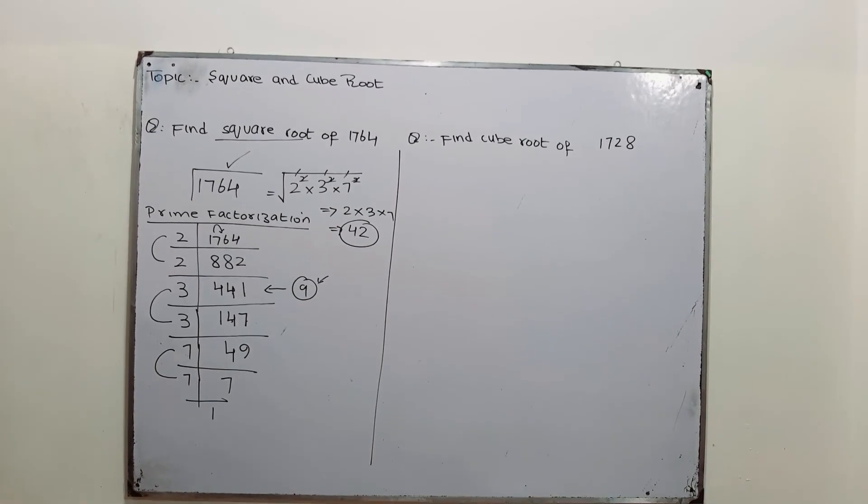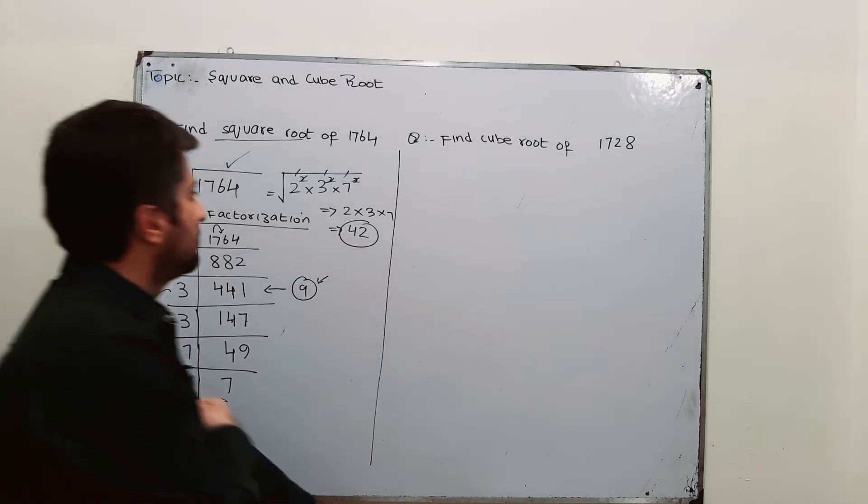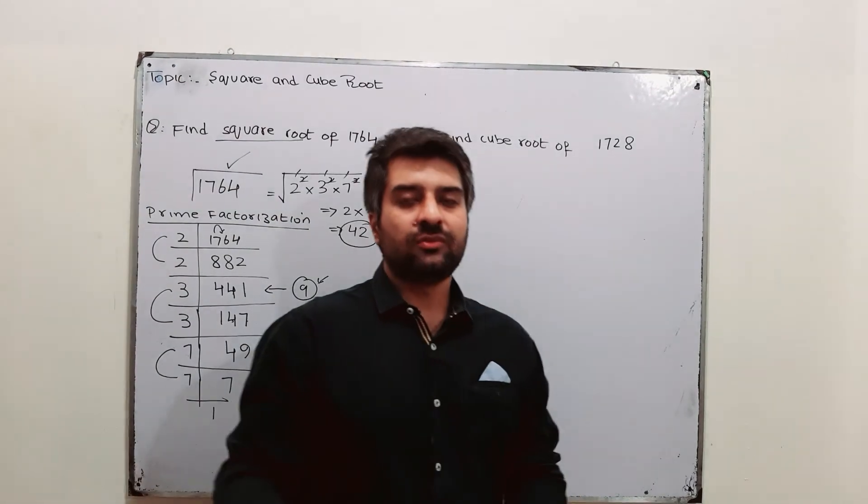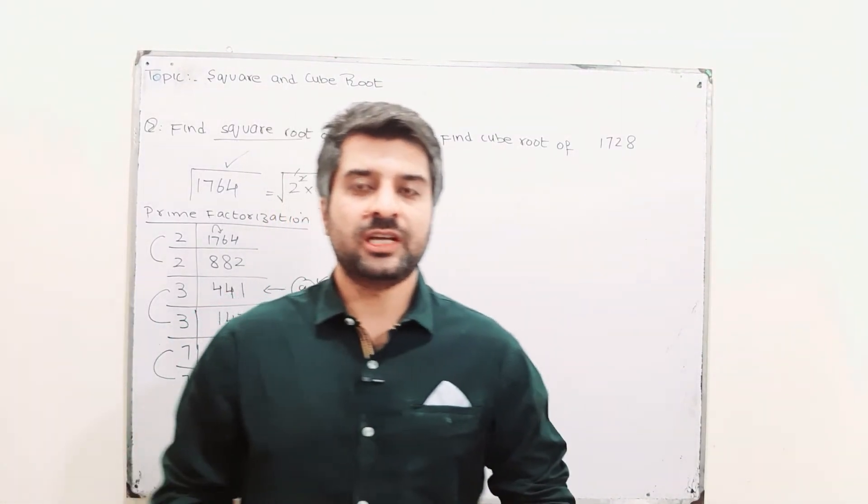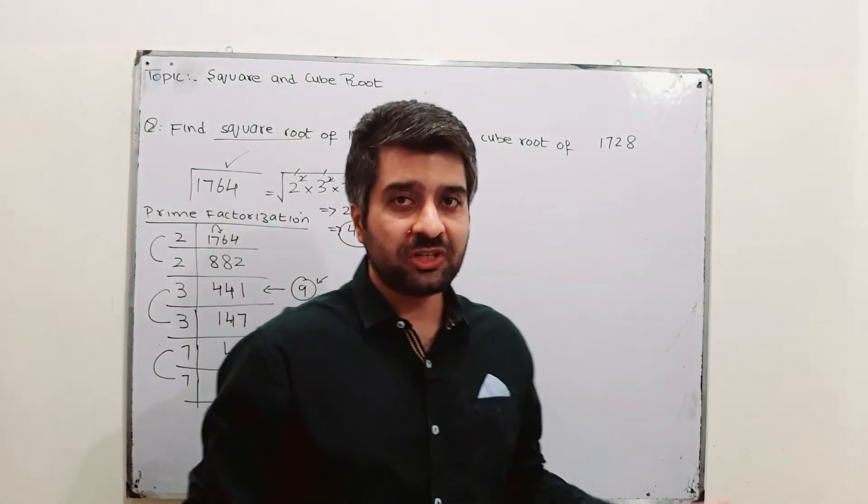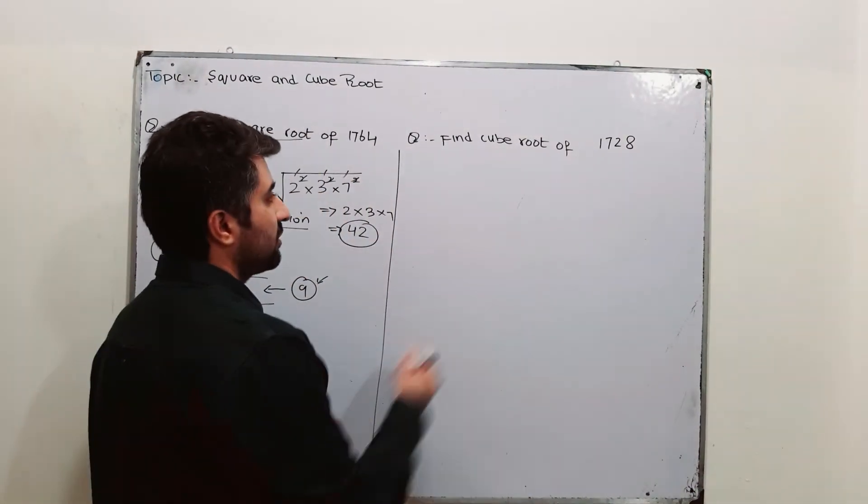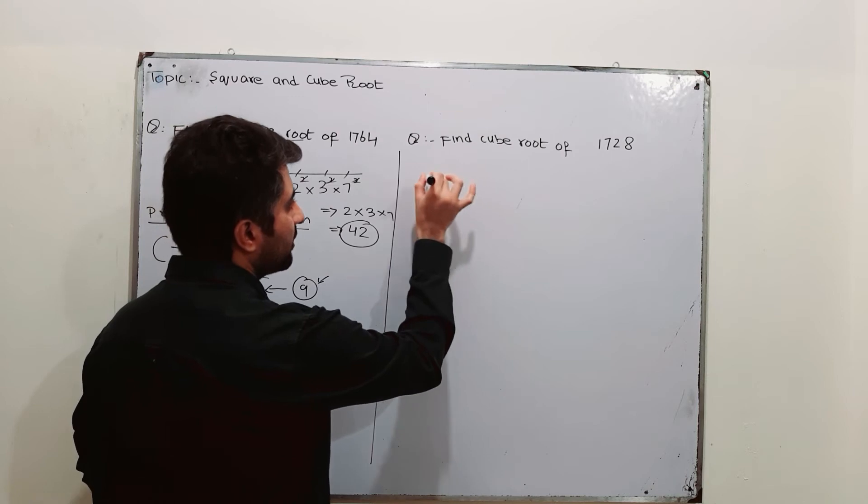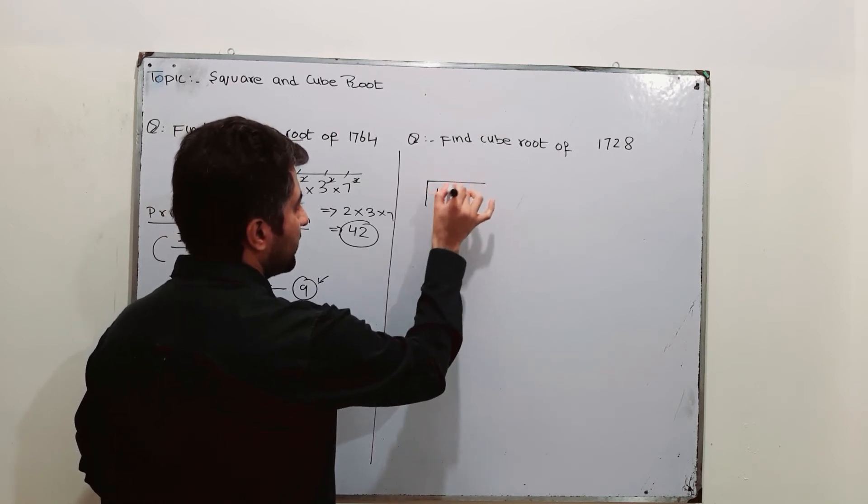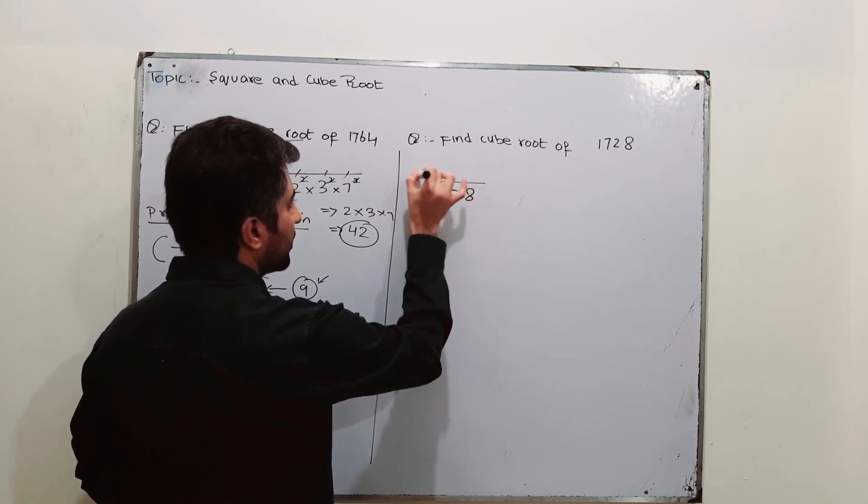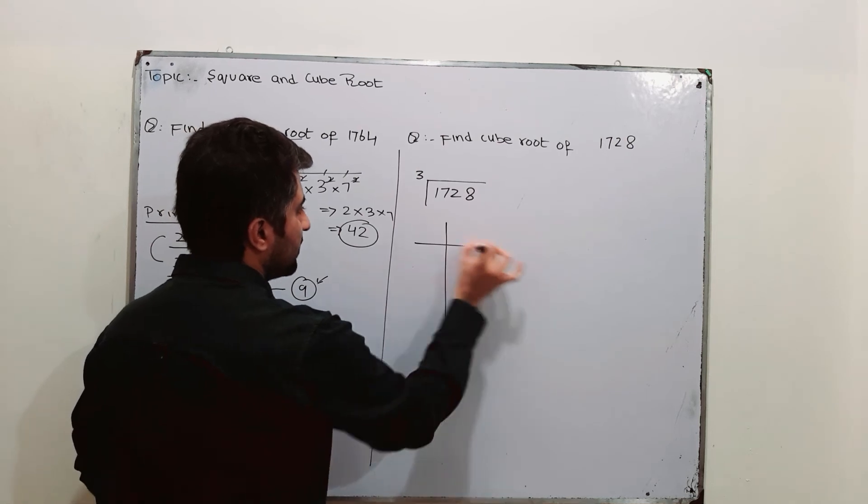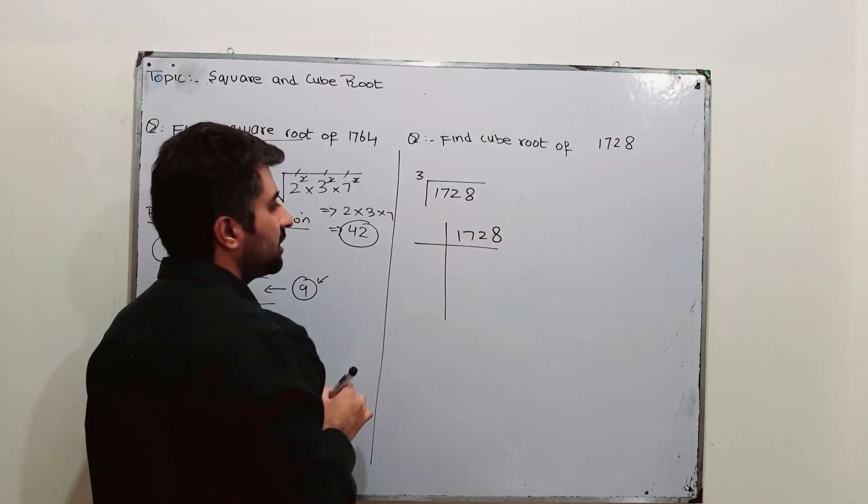Now, in the next example, we are going to discuss how to find the cube root of a number and the number is 1728. So, let us start. First of all, how you are going to write it? It is written like this: 1728 cube root. Factorize. Do prime factorization of 1728.